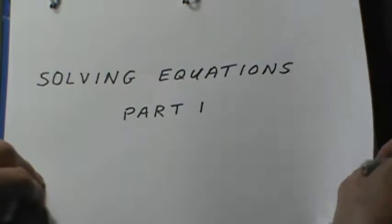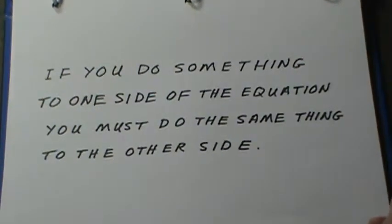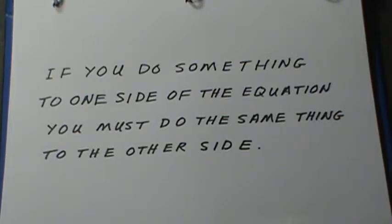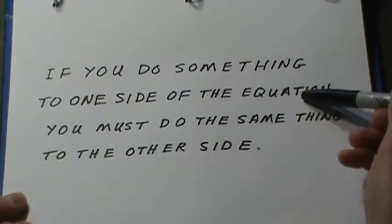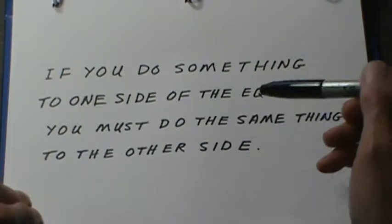When learning to solve equations, there is basically one rule that you have to keep in mind when you are operating with two sides of an equation. If you do something to one side of the equation, you must do the same thing to the other side.